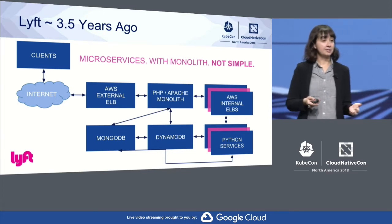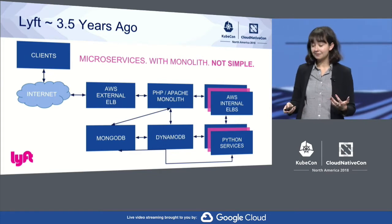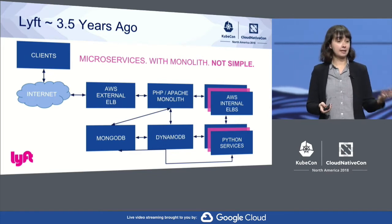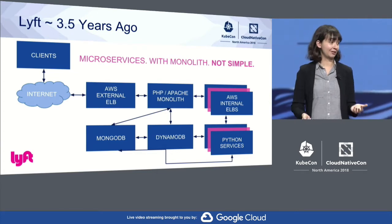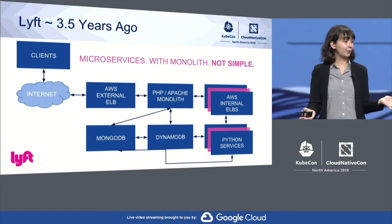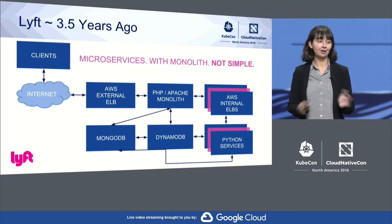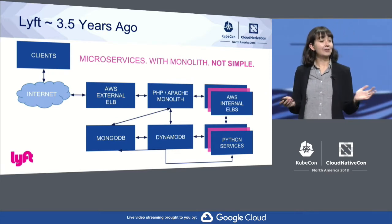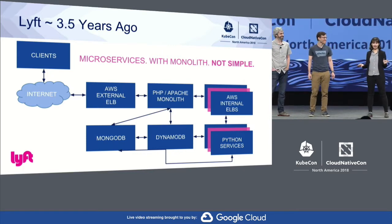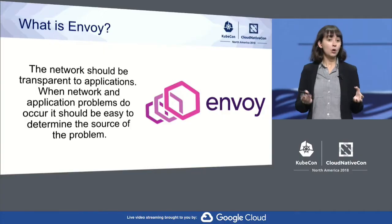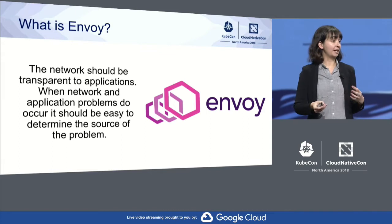Some of the issues we experienced with this topology at Lyft included lack of observability with ELBs. Another issue is that there are numerous technologies — if I polled the room asking for everyone's favorite language or favorite proxy back in the day, we'd get different answers. A lot of those issues were actually the forcing function in defining Envoy's mission.